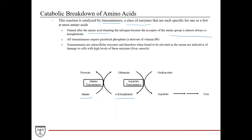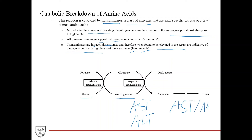All transaminases require pyridoxal phosphate, a derivative of vitamin B6. Transaminases are intracellular enzymes, so when they are found elevated in serum peripheral blood tests, it is indicative of damage to cells with high levels of these enzymes, such as liver or muscle. A classic example is measuring AST (aspartate transaminase) and ALT (alanine transaminase) levels, and often the AST-to-ALT ratio is calculated. Highly elevated levels of these enzymes in serum are often indicative of hepatotoxicity or liver damage.